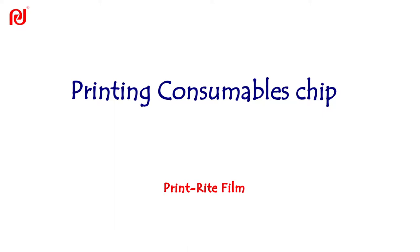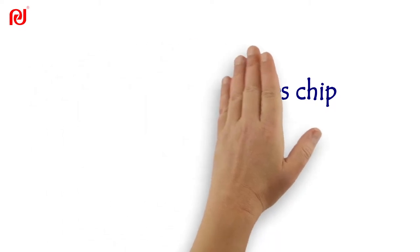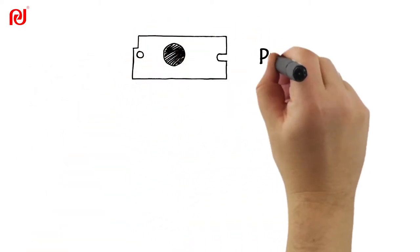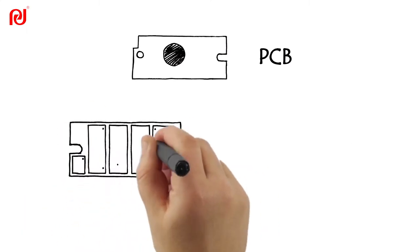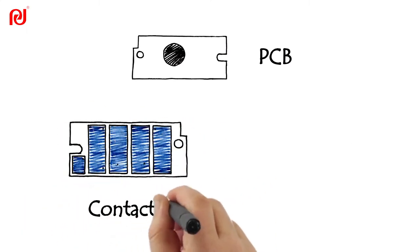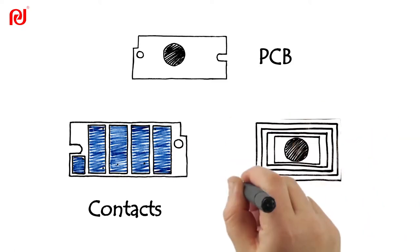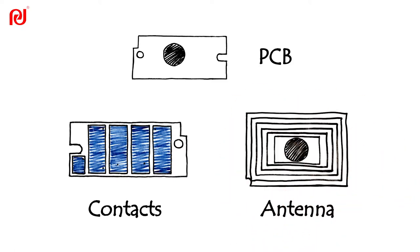Let's take a look into printing consumables chip. Usually consumables chip is composed of a PCB, print circuit board, with several components and conductive terminals to physically connect to printer. In addition, some consumables chip use antenna to communicate with printer.